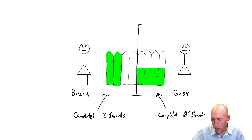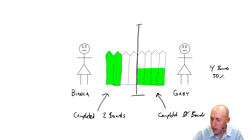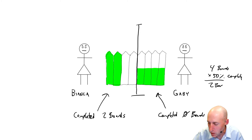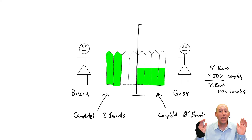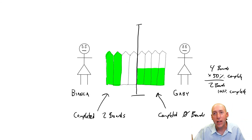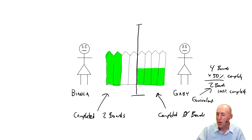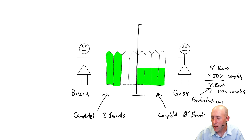Because you and I can see — we're very logical people — that Gabby has worked on four boards, and each of those boards is 50% complete. So if we have four boards that are half done — four boards at 50% complete — that is the equivalent of having two boards that are 100% complete. That's the key to this whole chapter. This will unlock the chapter. It's the equivalent: four boards at 50% complete is the equivalent of two boards at 100% complete. We call this equivalent units.